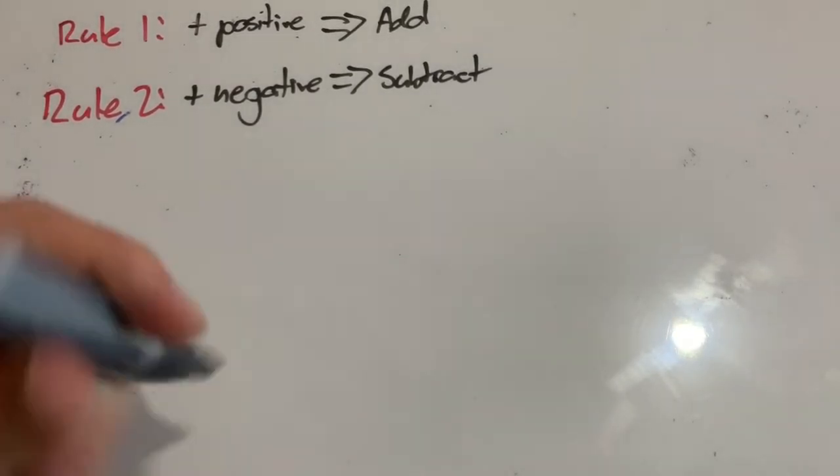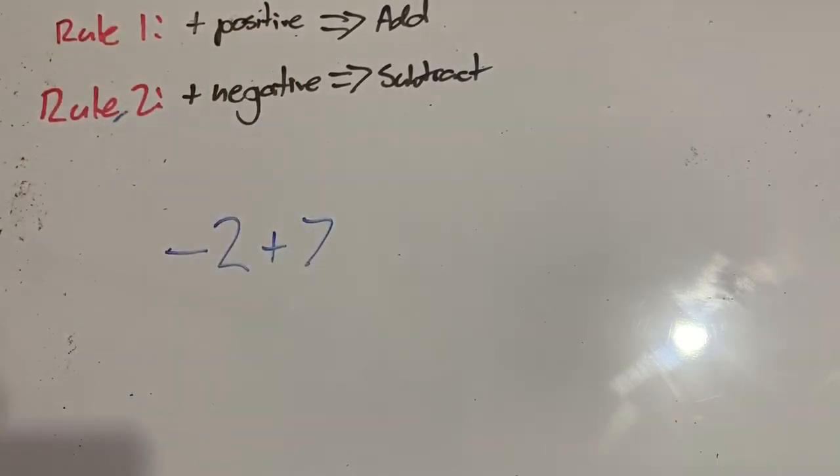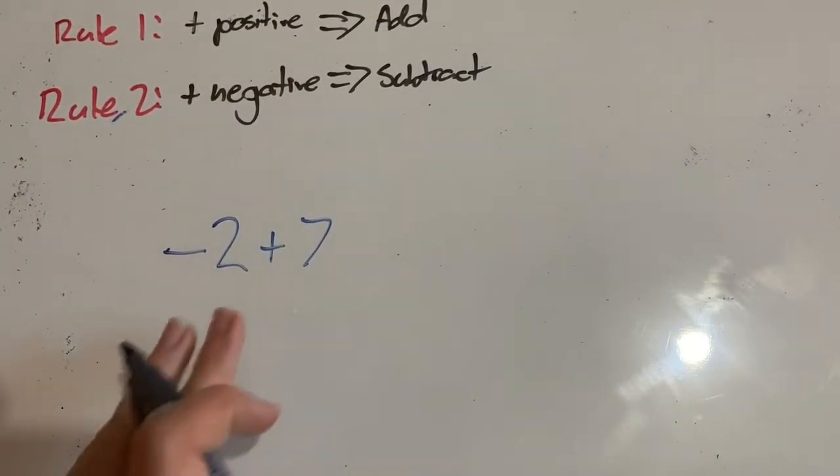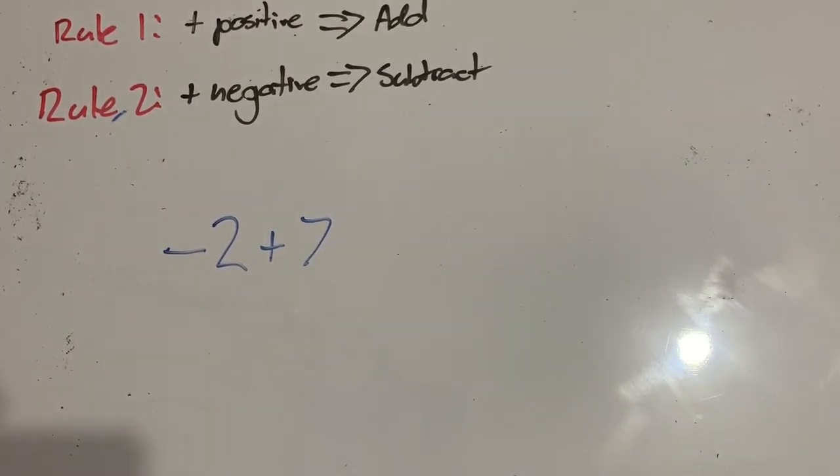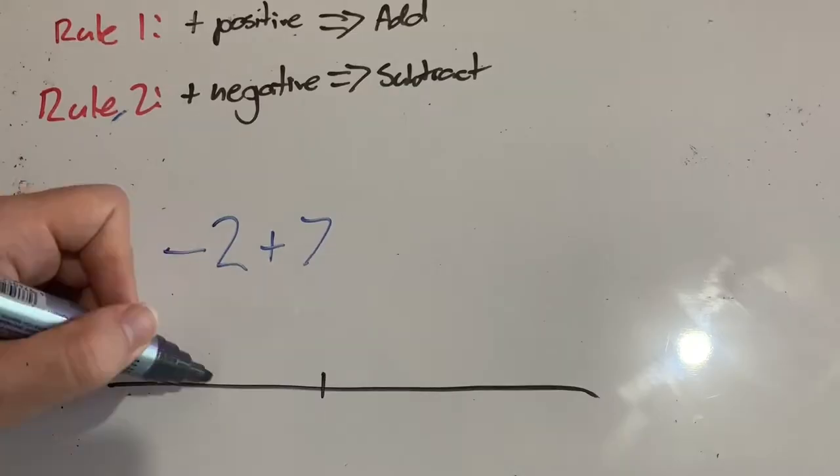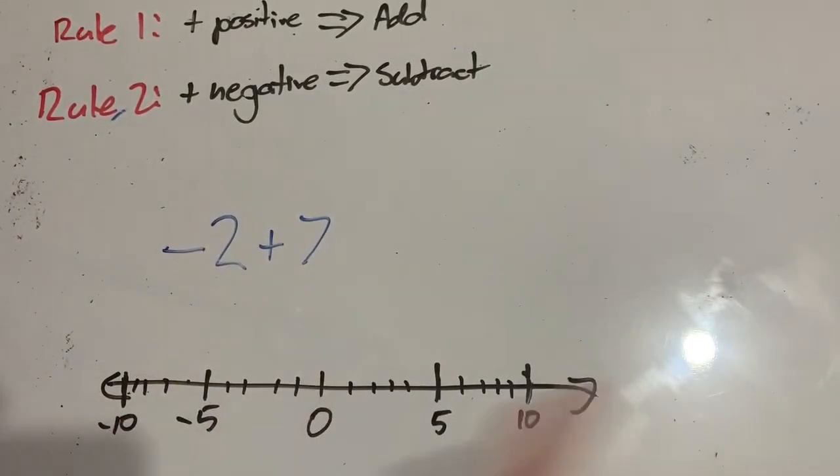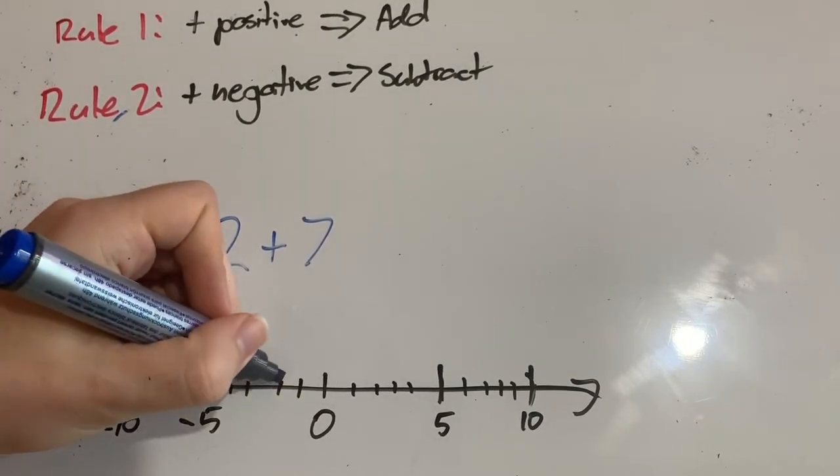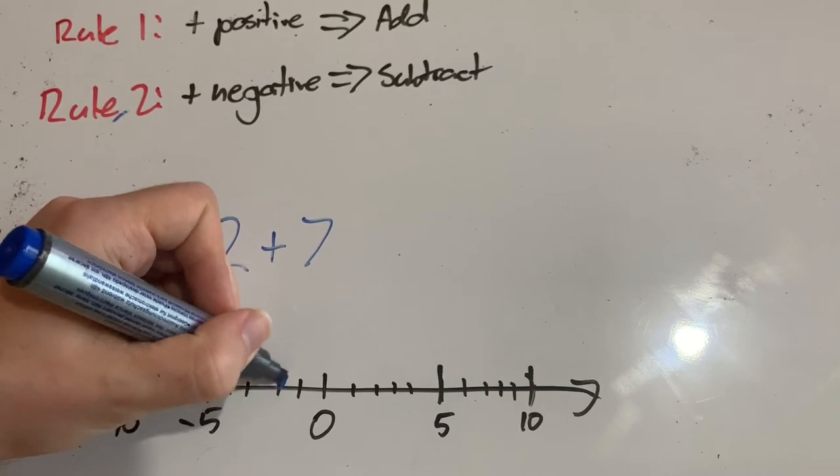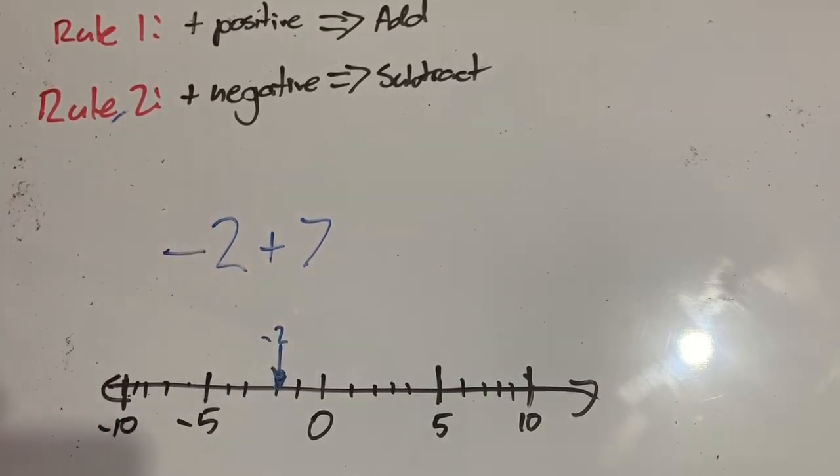Let's start with this problem here: negative 2 plus 7. So I am starting on negative 2 and I need to add 7. It's easier for me actually to imagine this on a number line, so I'm going to draw this out. I've got a number line here, zero's in the middle, negatives to the left, positives to the right. I would like to start on negative 2, which is here. And then I want to jump 7 up.